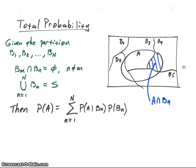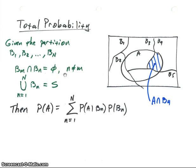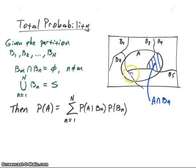When we develop total probability, we first start with a partition. A partition is a group of sets — we'll label them B1, B2, through B sub N. Each one of these sets is disjoint or mutually exclusive with all of the other sets. So if we take two sets B sub M and B sub N and take their intersection, we get the null set. And if we take the union of all of them, we get our sample space. In the Venn diagram, I've got five sets B1 through B5, and they all partition the sample space with nothing in common between them.